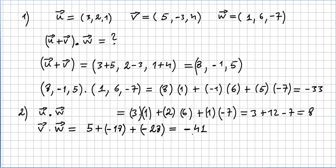So u times w is 8, v times w is -41. 8 minus 41 is -33. So we just found u inner product with w plus v dot product inner product with w.